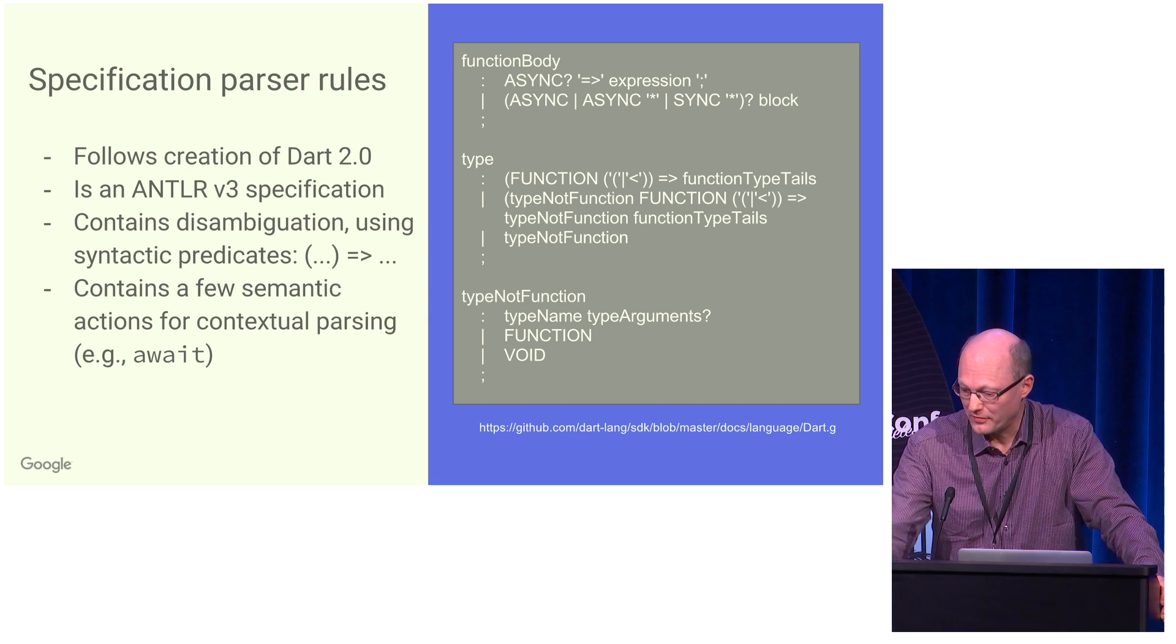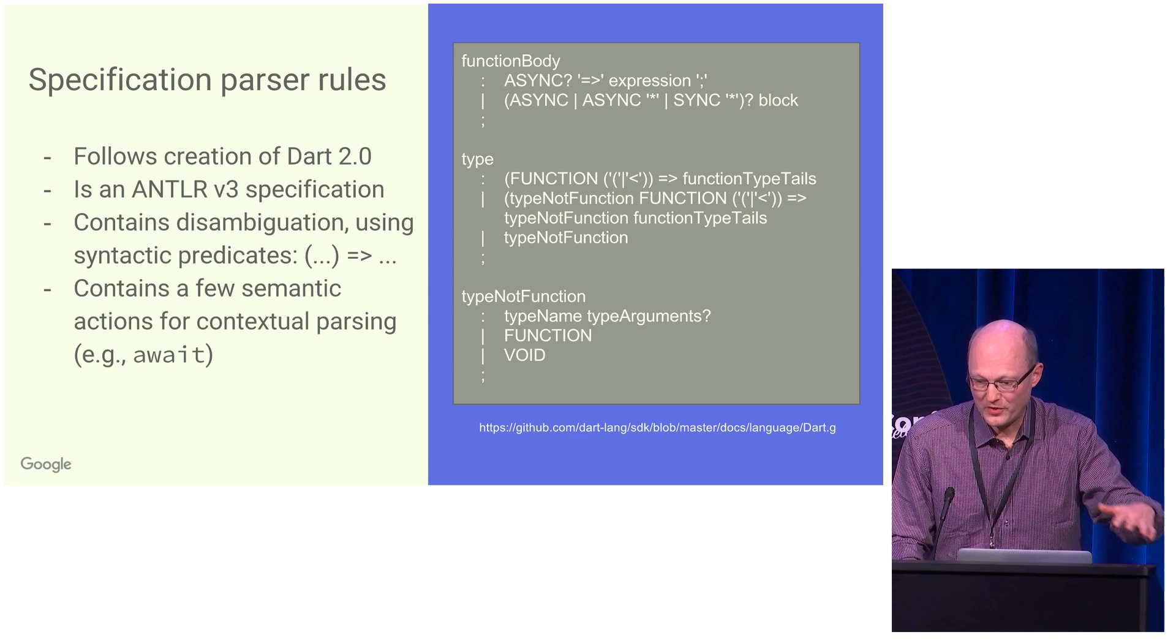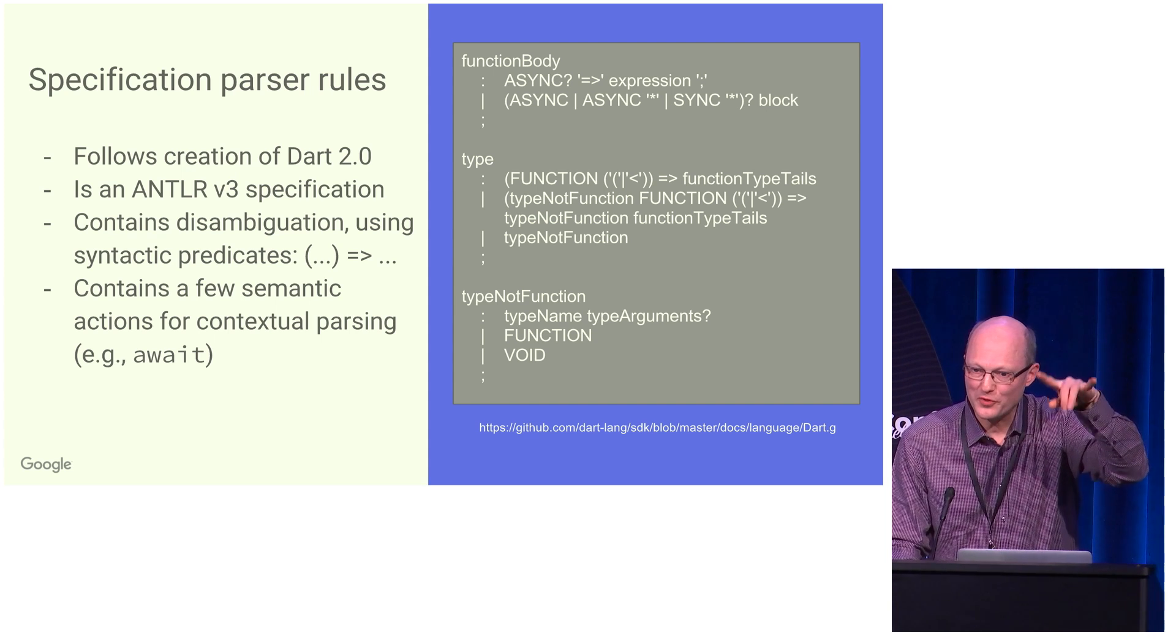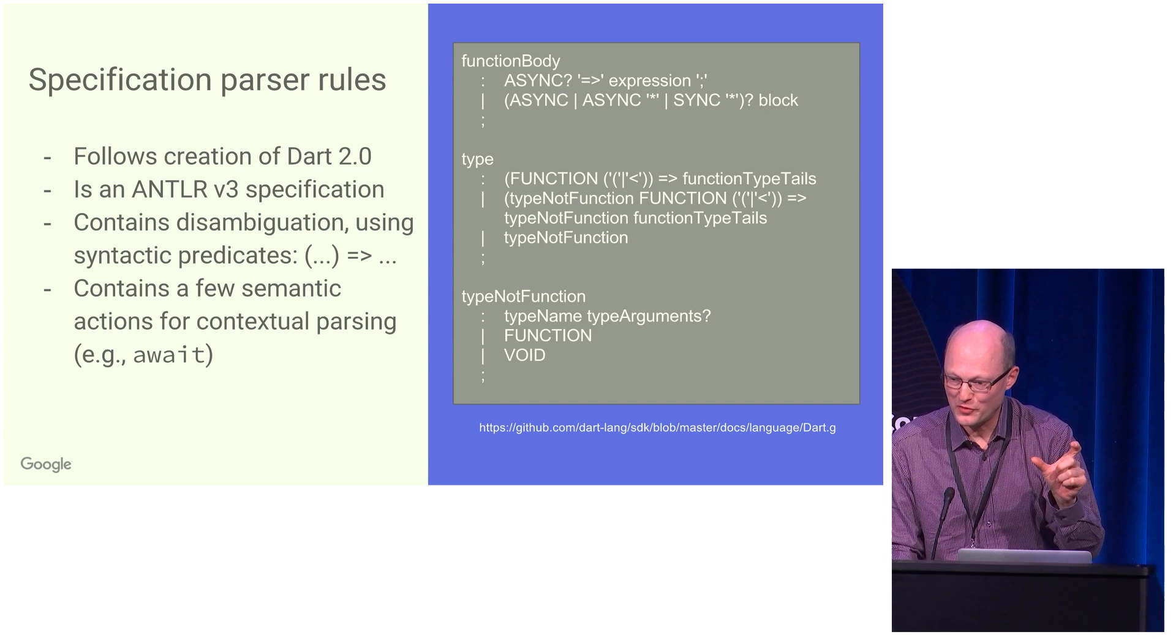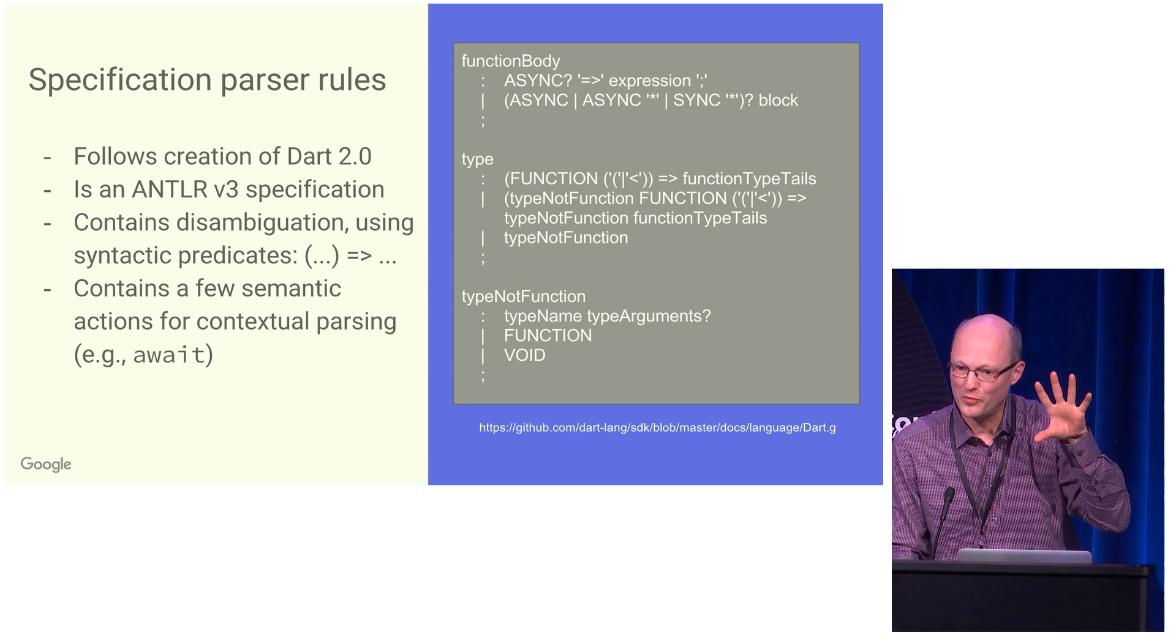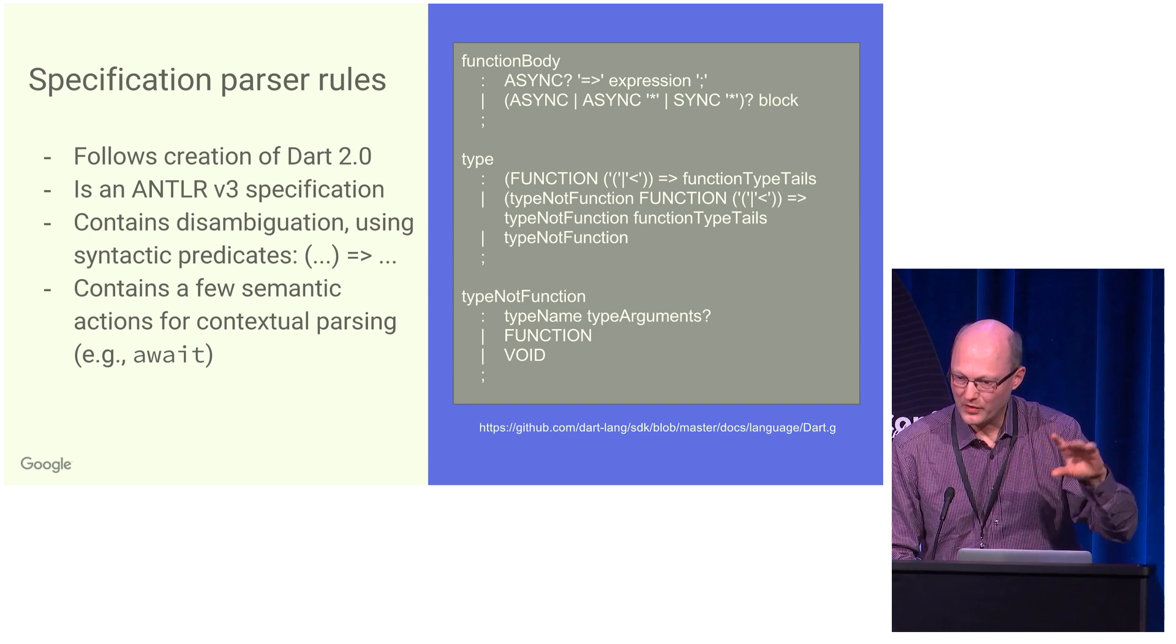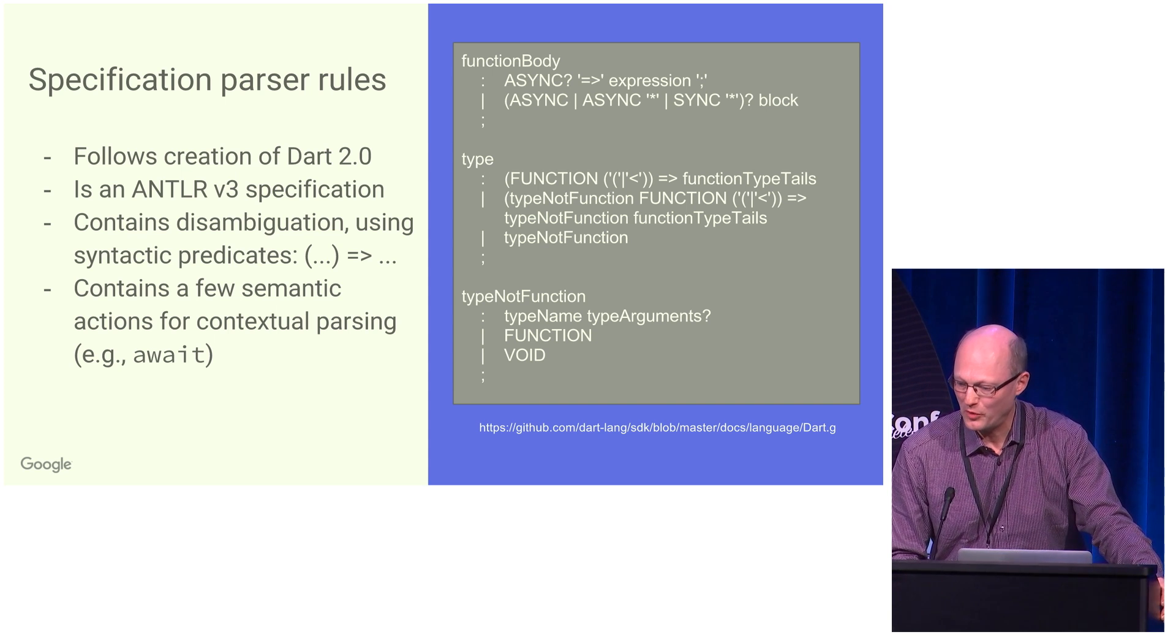For instance, down there you have something like type not function, which is the old type as you knew it, and then it has the function keyword separately. The reason we have that is that we cannot allow function to be an ordinary type name because then you could give it type arguments and it would be ambiguous whether we are currently reading a function type or reading something that just uses function as the name of a class.